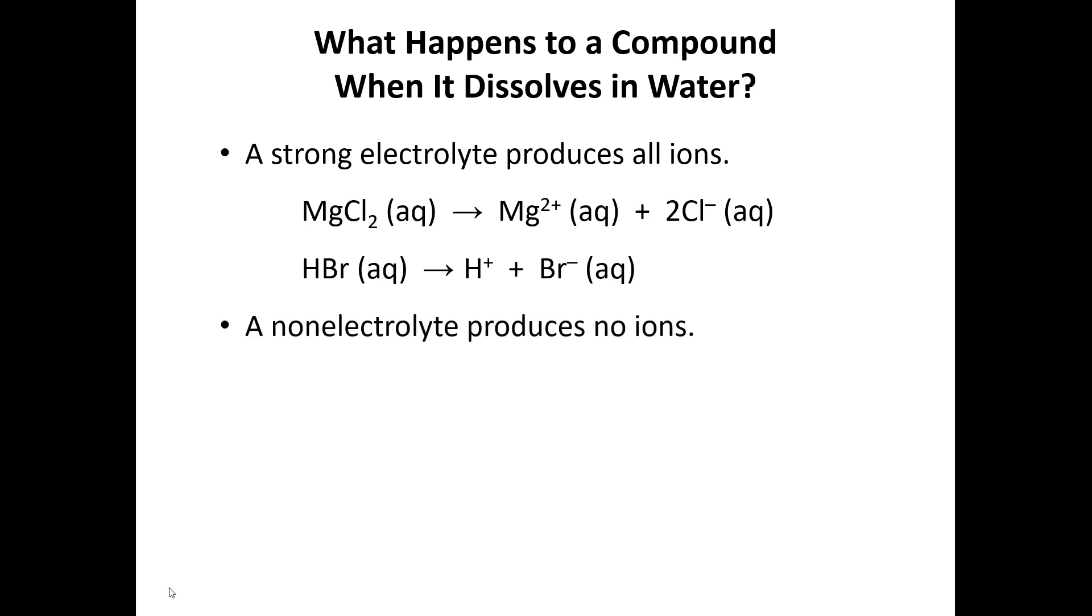At the opposite end is a non-electrolyte, which is going to remain entirely intact and produce no ions. I have given ethanol as an example here. Ethanol is not an acid, it's not an ionic compound, and so when you dissolve ethanol in water, 100% of the molecules remain intact and no ions are produced.